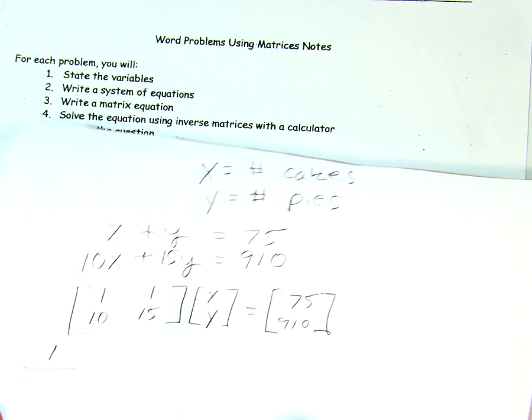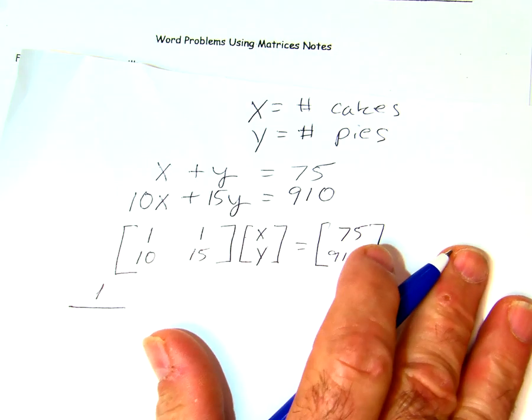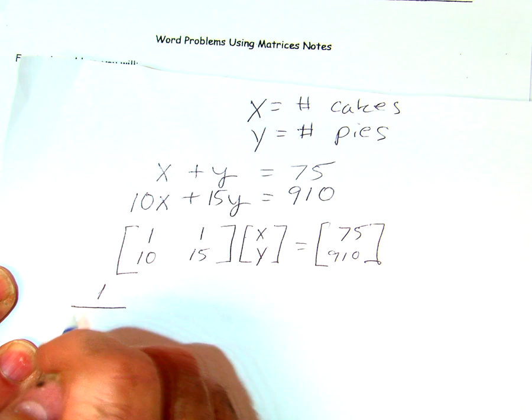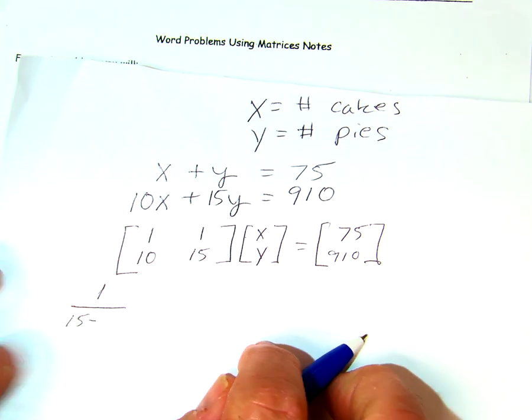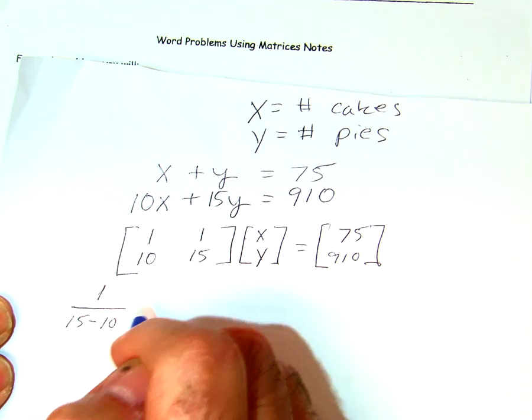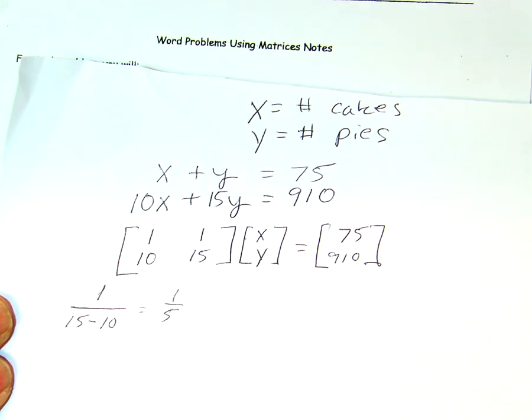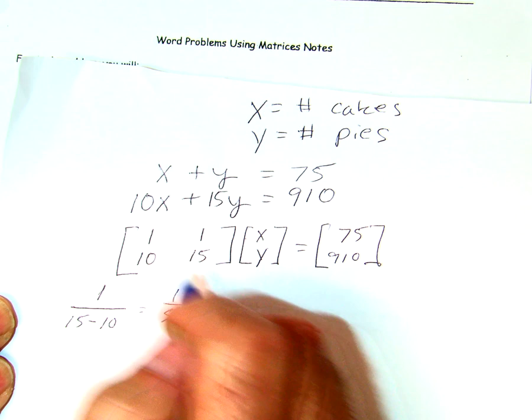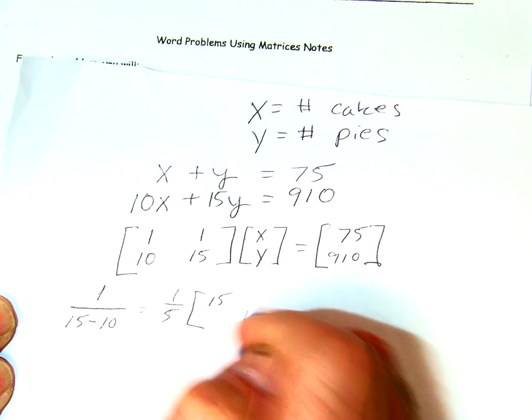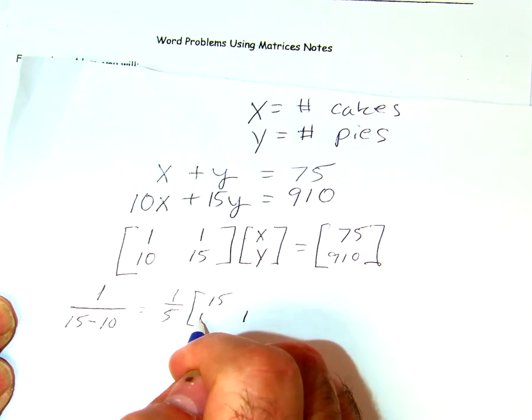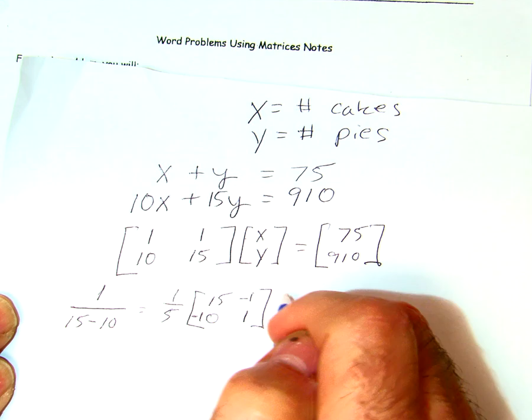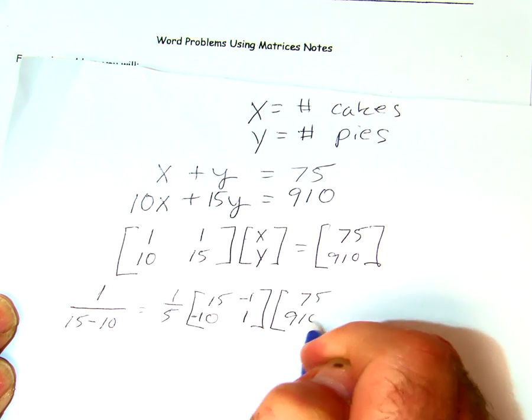First, we have to find the determinant and put it over 1. So, 1 over, here's the main diagonal, 1 times 15 is 15. And then we take the other diagonal and multiply that, 1 times 10 is 10. And we, of course, we subtract, and we get 1 over 5. And then we have to alter the matrix for the inverse. This is the main diagonal. We switch the elements. This is the other diagonal. We make the signs opposite. So that's a negative 10 and a negative 1.